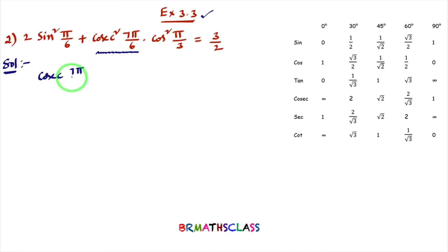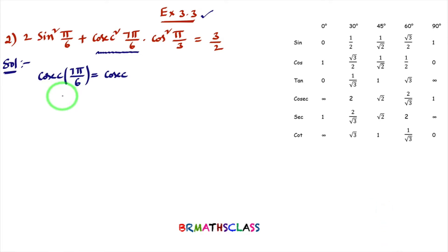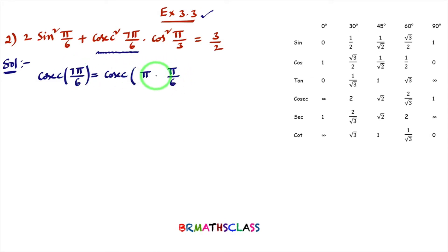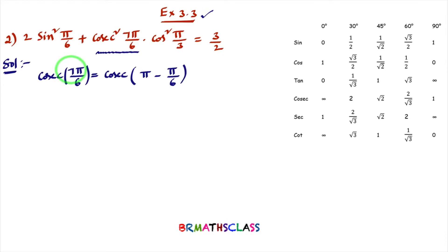How to calculate cosec(7π/6)? There is a trick. You write π here and then π/6. You write either plus or minus — if you write minus, 6π − π = 5π/6, but I need 7π/6. With plus, 6π + π = 7π/6. So 7π/6 = π + π/6.